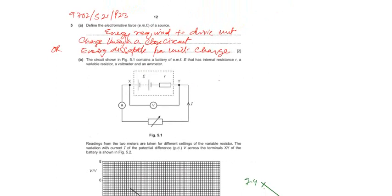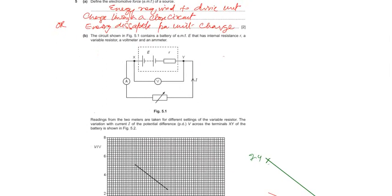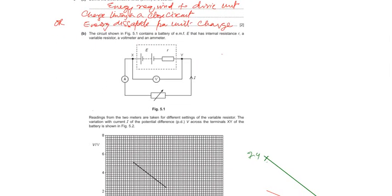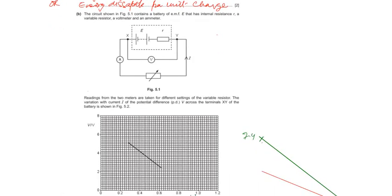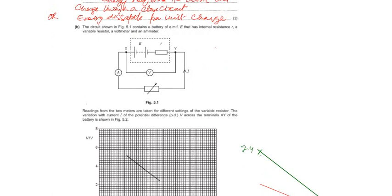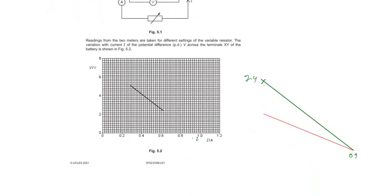Part B, the circuit contains a battery of emf E that has internal resistance r and a variable resistor, a voltmeter which is showing the terminal potential difference. R is the resistance and ammeter is in series. Readings from the two meters are taken for different settings of the variable resistor. The variation with current I of the potential difference across the terminals XY of the battery is shown.